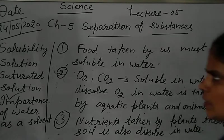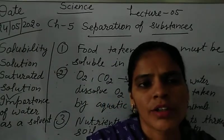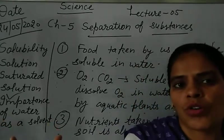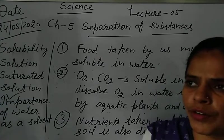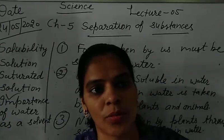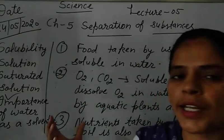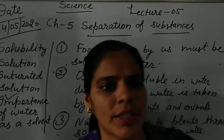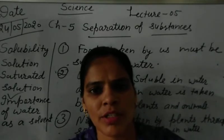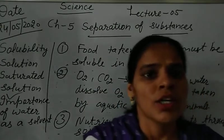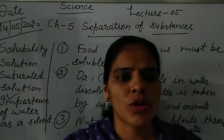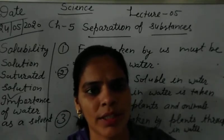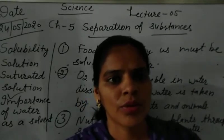So these were some importances of water as a solvent. In today's lecture, we discussed what solubility is, what a solvent is, what a solution is, and what a solute is. We described two main points: every substance has a different solubility in water, and solubility increases with temperature. We also discussed the importance of water as a solvent and saturated solution. This chapter is almost finished. The remaining portion is questions and answers, which you can try yourself. If any problem remains, note it down — next time we will address it. Thank you, have a nice day.